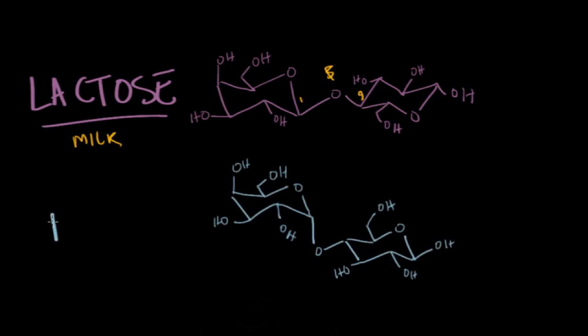Next up we have maltose. Maltose is again a disaccharide, but this time it's made of two individual glucose units. We've got a glucose right here, and a glucose right here.